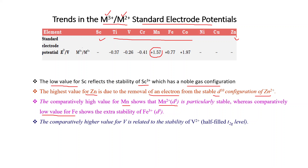At the same time, the low value for Fe compared to Mn shows the extra stability of Fe3+. Low value means M3+ is more stable; high value means M2+ is more stable. The comparatively higher value for V (vanadium) is related to the stability of V2+, which has a half-filled T2g level.